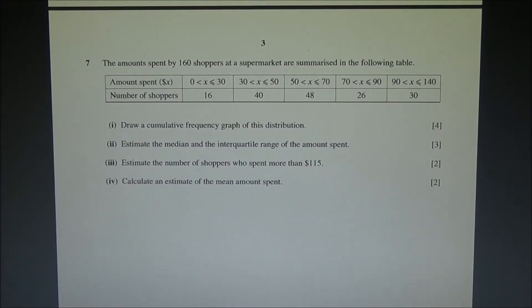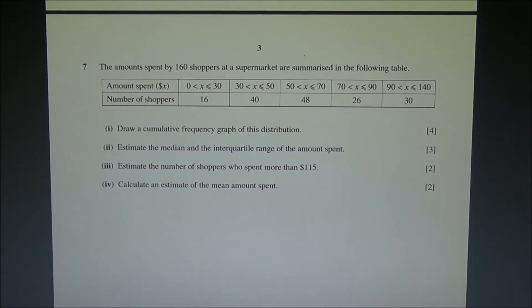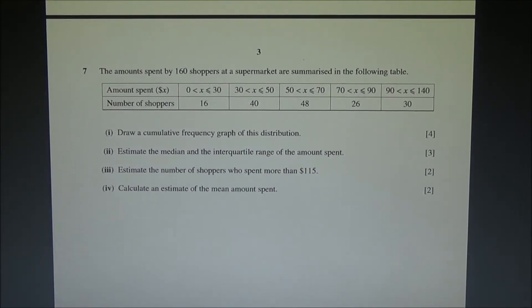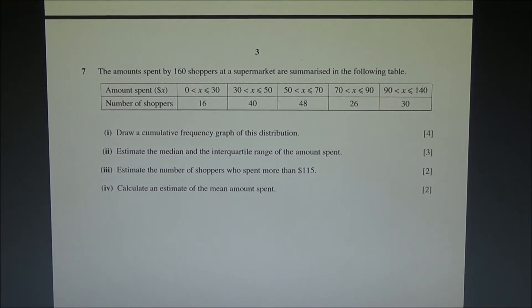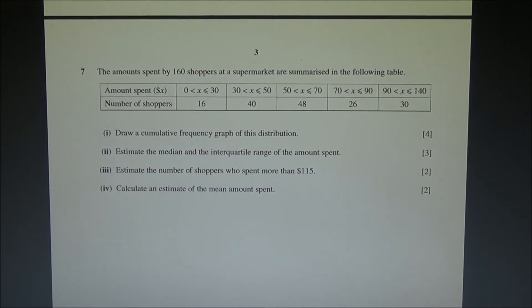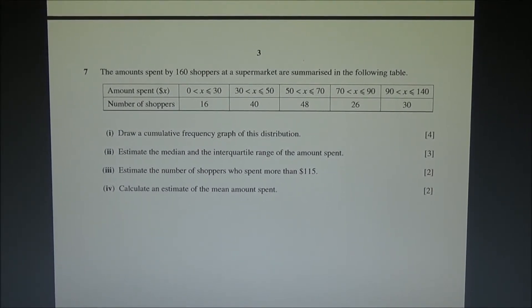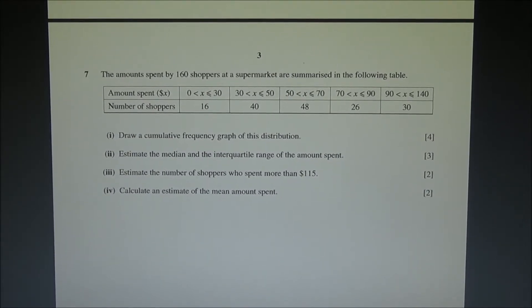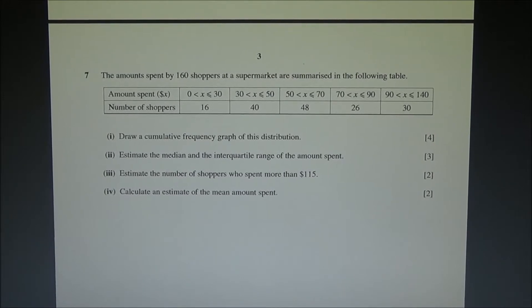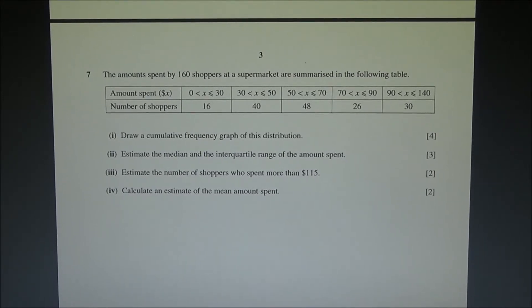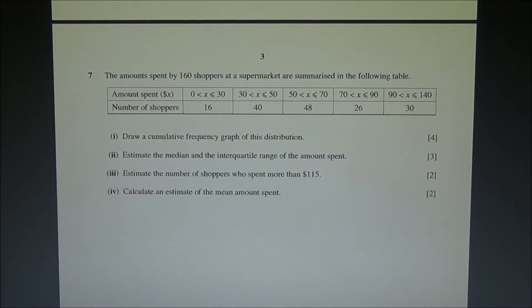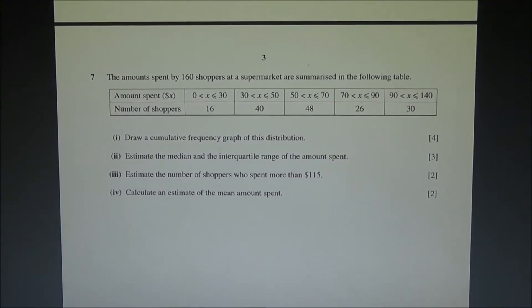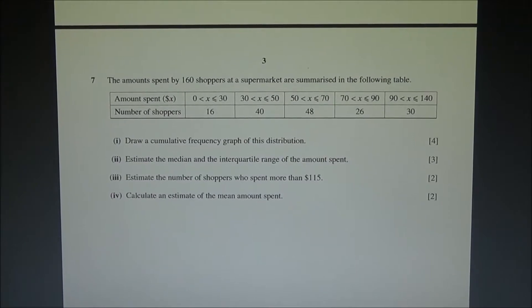Hi, question number 7 taken from June 2016 Advanced Level Math HSC S1. The amounts spent by 160 shoppers at a supermarket are summarized in the following table. As we can see, the table is given. We need to draw a cumulative frequency graph of this distribution and for the second part, estimate the median and interquartile range of the amount spent. Also, estimate the number of shoppers who spent more than $115. Calculate an estimate of the mean amount spent.